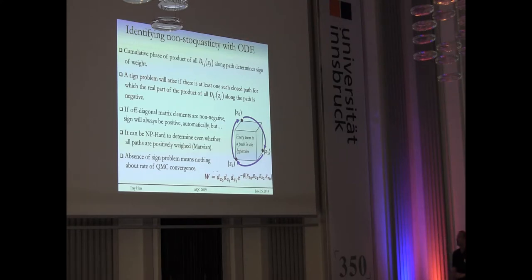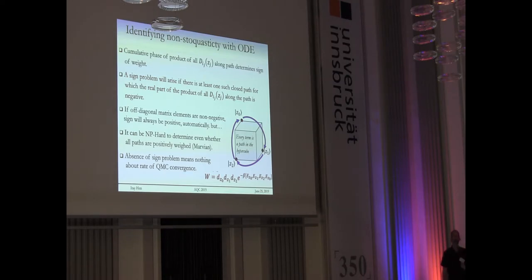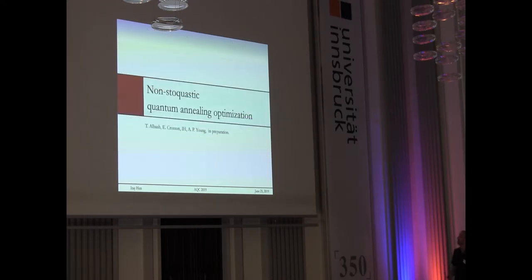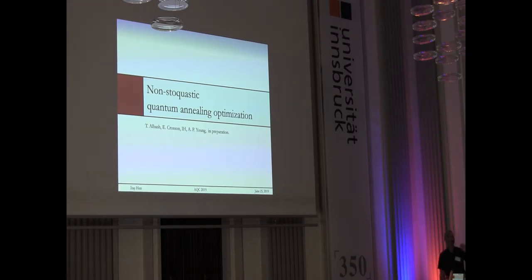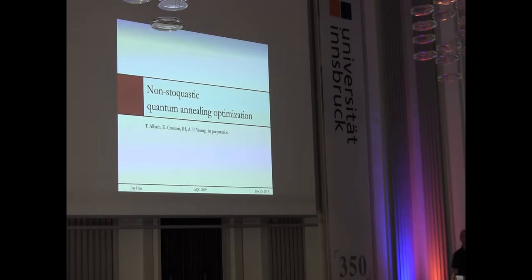Another important point: the fact that a model has no sign problem says absolutely nothing about whether quantum Monte Carlo can equilibrate on that Hamiltonian efficiently. Classical spin glasses, for example, don't have sign problems, yet they are very difficult to equilibrate. So I've given a prescription for identifying a sign problem rigorously — it's not simply about the sign of the off-diagonal elements.